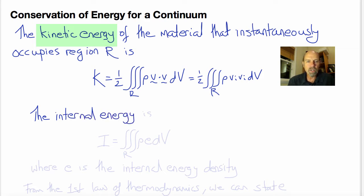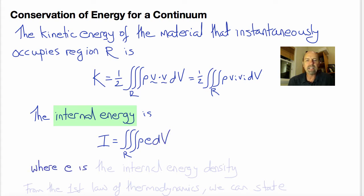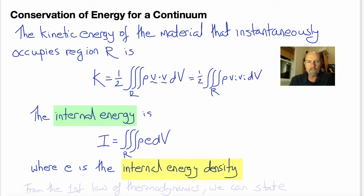The internal energy I is the volume integral over R of rho times E with respect to volume, where E is defined as the internal energy density — in other words, the internal energy per unit mass. We'll discuss later what the internal energy could be.